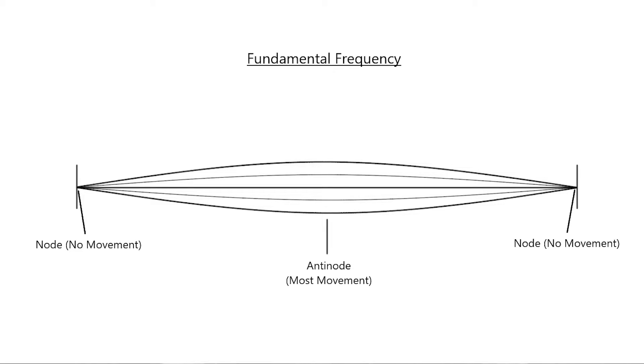The physics of harmonics are amazing, and if you're a music lover or an audio nerd like me, you might agree. Let's look at a guitar string to imagine what harmonics look like. When you play a note on a guitar, the string vibrates in a circular motion. At each end are nodes where the string is held in place, and the center is an antinode where the string vibrates most intensely.